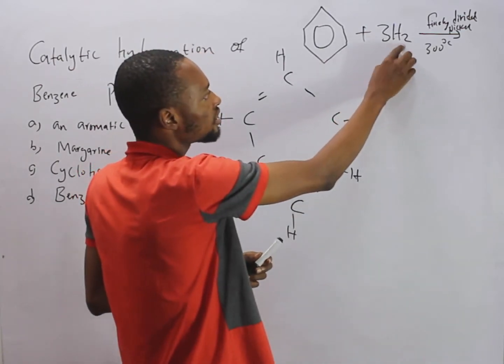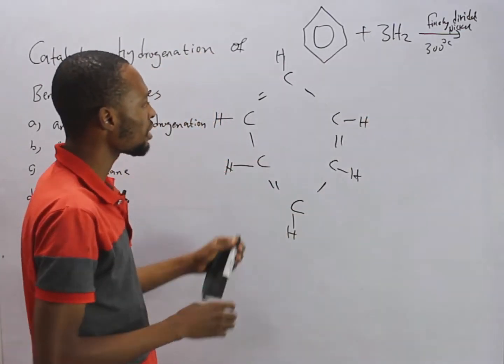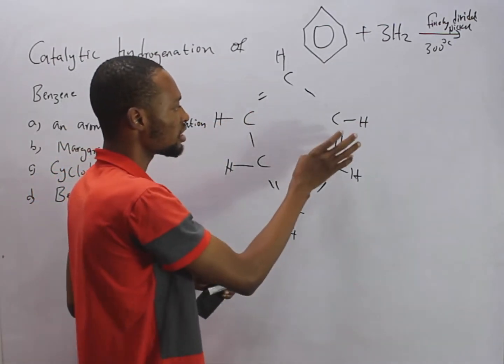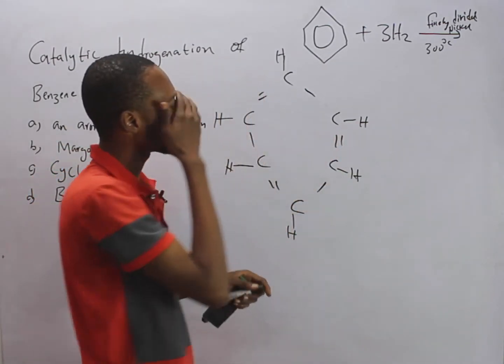we have 3H2. Now remember, we have alternate double bond here. One here, one here, and one here.